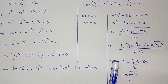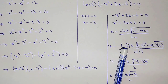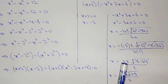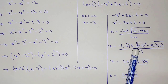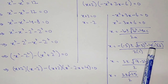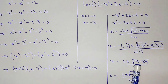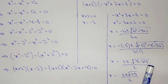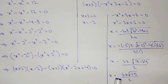So x will be equal to minus minus, that is plus. So 3 plus or minus under root of minus 3 squared, that is 9, minus 4 into 1 into 6, that is minus 24, divided by 2. So we get x equal to 3 plus or minus under root of minus 15, divided by 2.